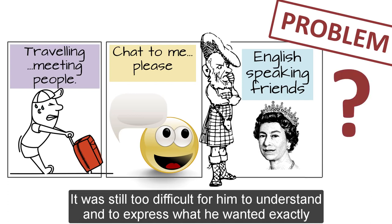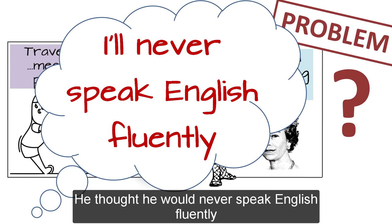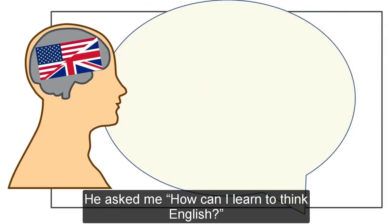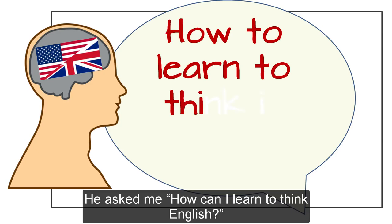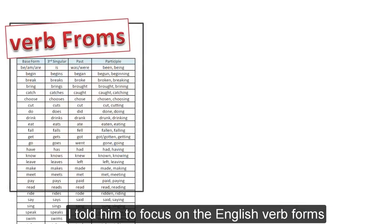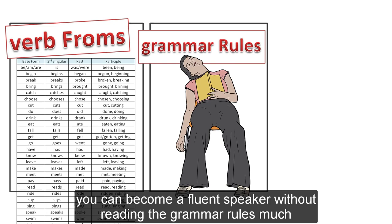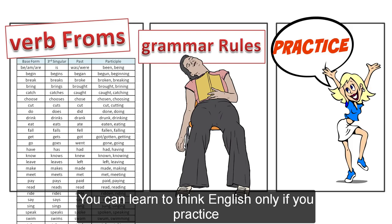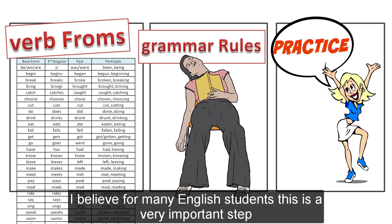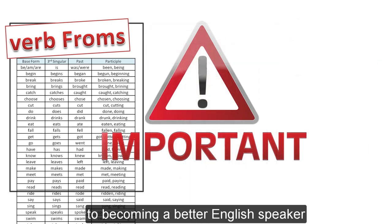It was still too difficult for him to understand and to express what he wanted exactly. He thought he would never speak English fluently. He asked me, how can I learn to think English? I told him to focus on the English verb forms. If you can use all the verb forms in a context correctly, you can become a fluent speaker without reading the grammar rules much.